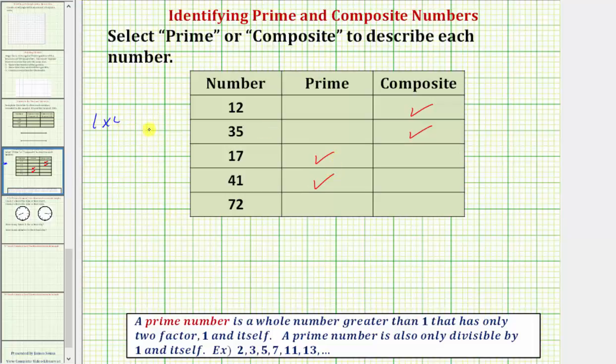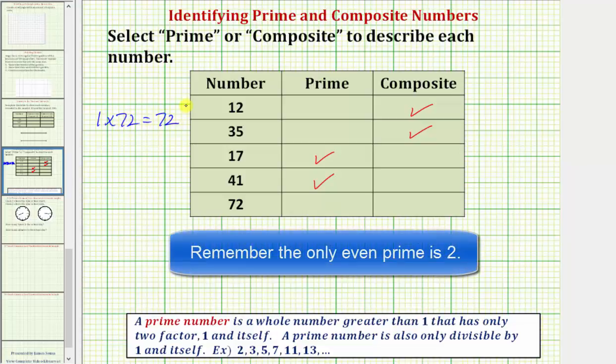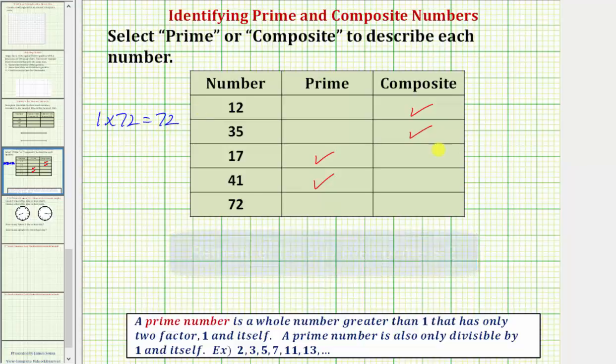And the last number is seventy-two. So one times seventy-two is equal to seventy-two. But again notice how seventy-two is actually even, it ends in a two. So it's not going to be prime, it's going to be composite. As soon as you recognize that, say two times thirty-six equals seventy-two, we can go ahead and stop because we can see that seventy-two has more than two factors. But for extra practice, let's continue.